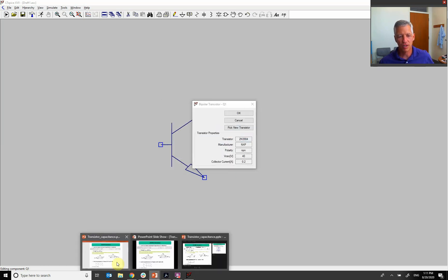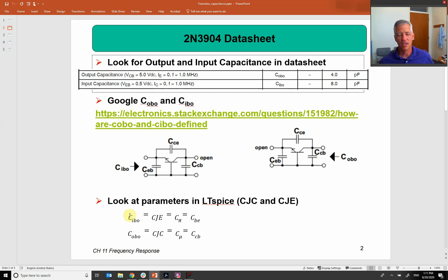So if we go back to here, this looks at all of them together. The C_IBO is the same as the C junction connected to my emitter, which the book calls C_pi, which is the capacitance between the base and the emitter. The C_OBO is the CJC, the junction capacitance connected to the collector, which the book calls C_mu. And that is the capacitance between the collector and the base.